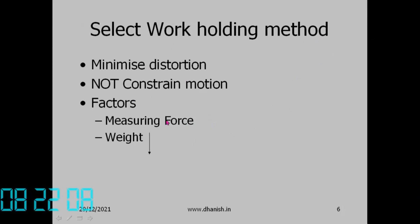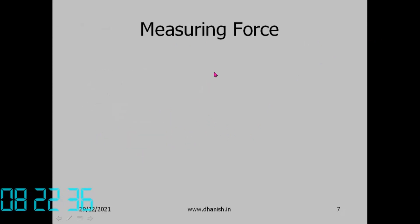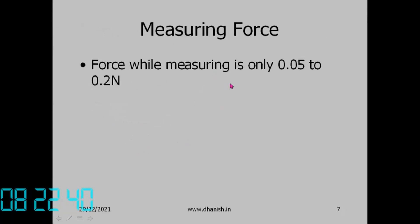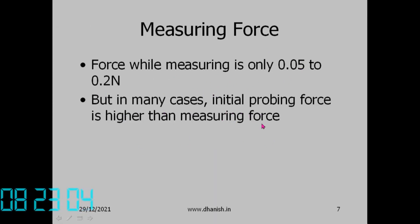Factors when deciding work holding: the measuring force, which is only 0.05 to 0.2 Newton controlled by the probe. However, the initial probing force can be higher due to dynamic forces when the stylus comes into contact with velocity. A dynamically applied force can be double the static force, so the clamping should withstand this initial impact.